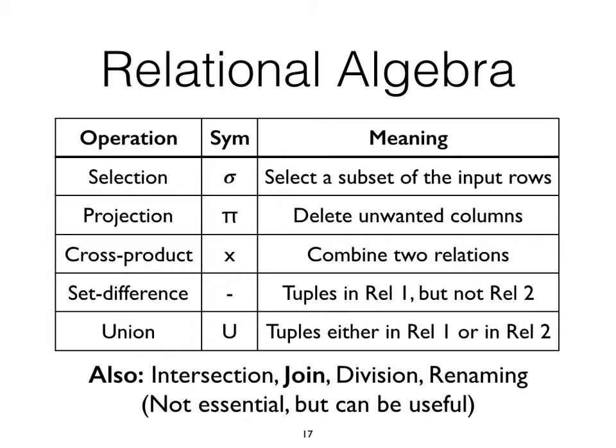So what is relational algebra? In arithmetic you have operators — plus, minus, division, multiplication, exponentiation — a set of operators that take numbers as input and produce numbers as output. Relational algebra is exactly the same: you have a set of operators that take a table as input and produce a table as output. There are five basic operators: selection, projection, set difference, and union. There are also others — intersection, join, division, and renaming — but those can be defined in terms of the basic five.